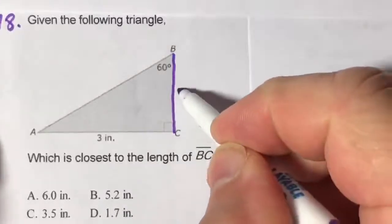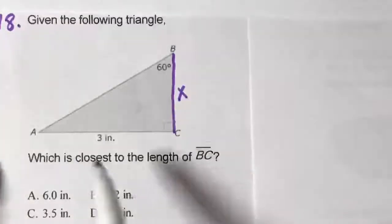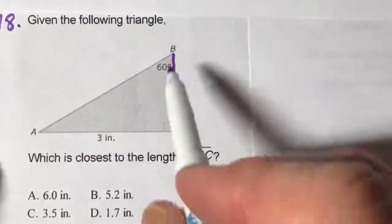That means you have to put something there to help you because you've got to find the length of BC.